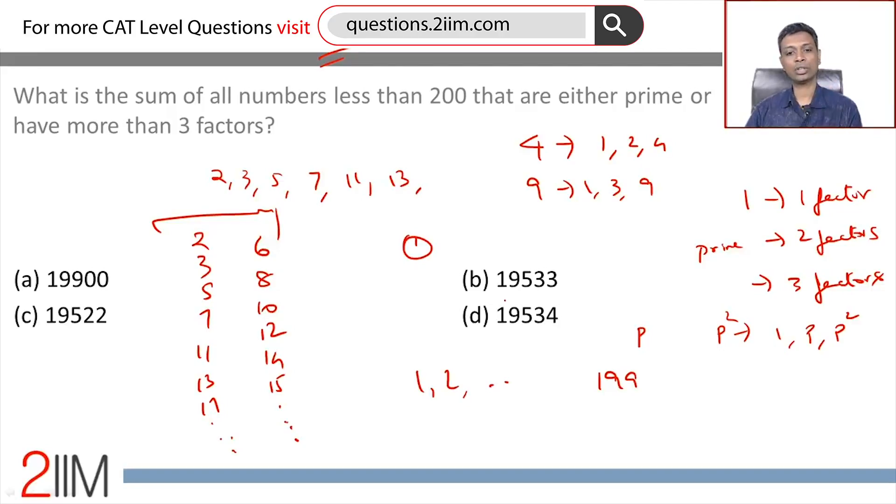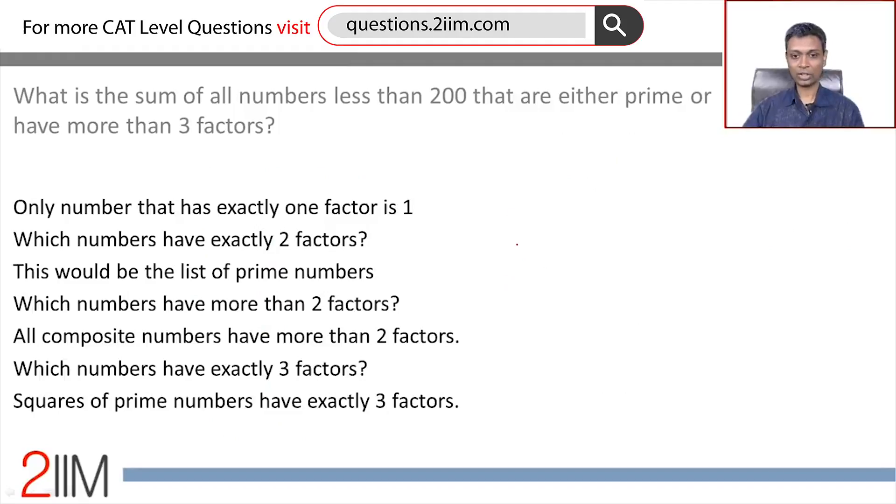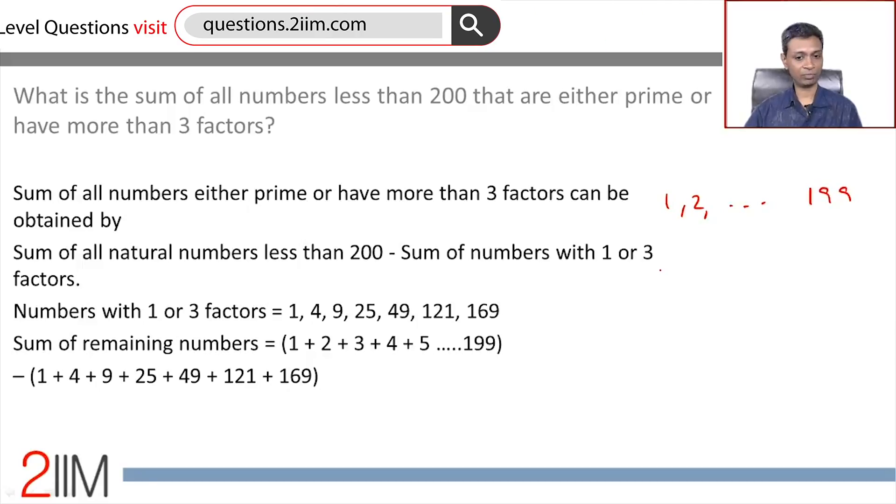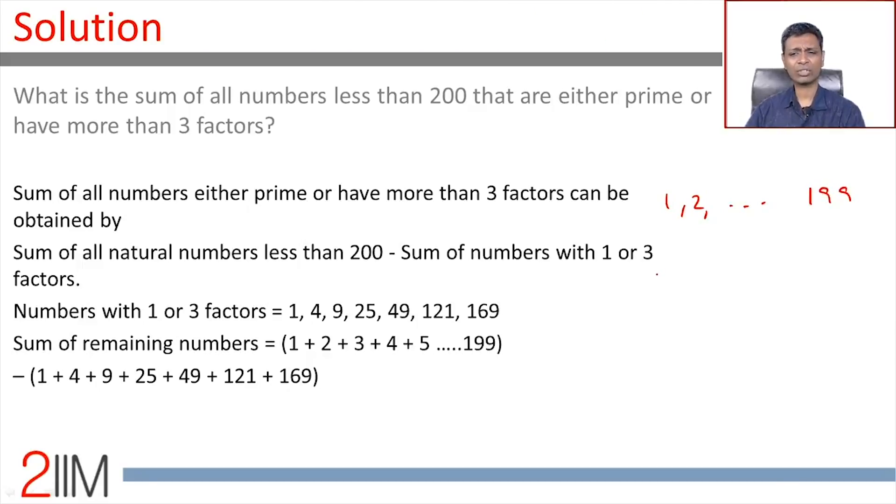Apart from 1, we will not count numbers that have exactly three factors. That is, we will not count numbers that are squares of prime numbers. Beautiful. Now we're done. So we're adding all numbers from 1, all natural numbers from 1 to 199. Within this list, we are going to subtract numbers that are squares of prime number apart from 1. We're going to subtract 1.